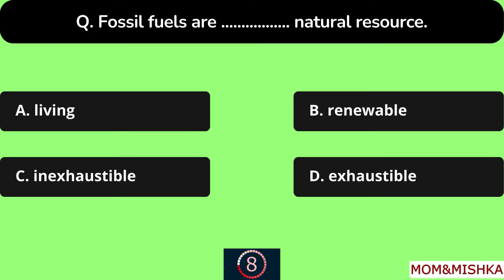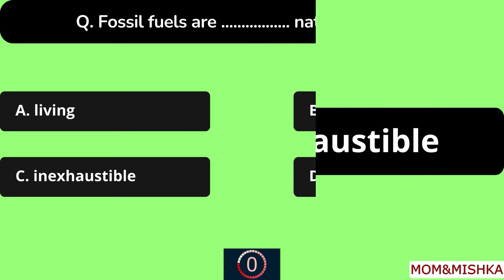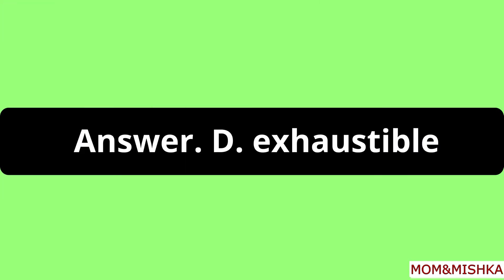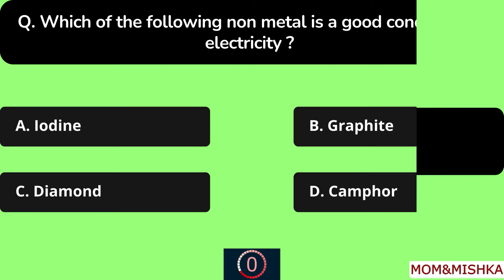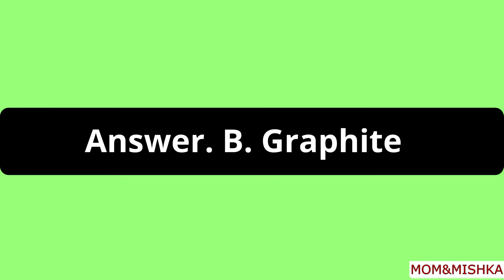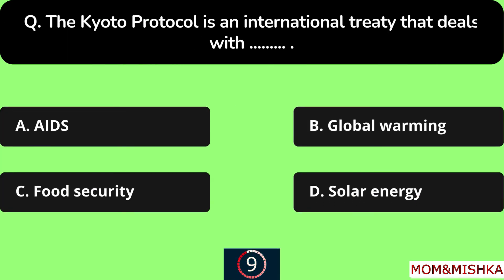Fossil fuels are a blank natural resource — exhaustible, option D. Which of the following non-metal is a good conductor of electricity? Graphite, option B. The Kyoto Protocol is an international treaty that deals with blank.